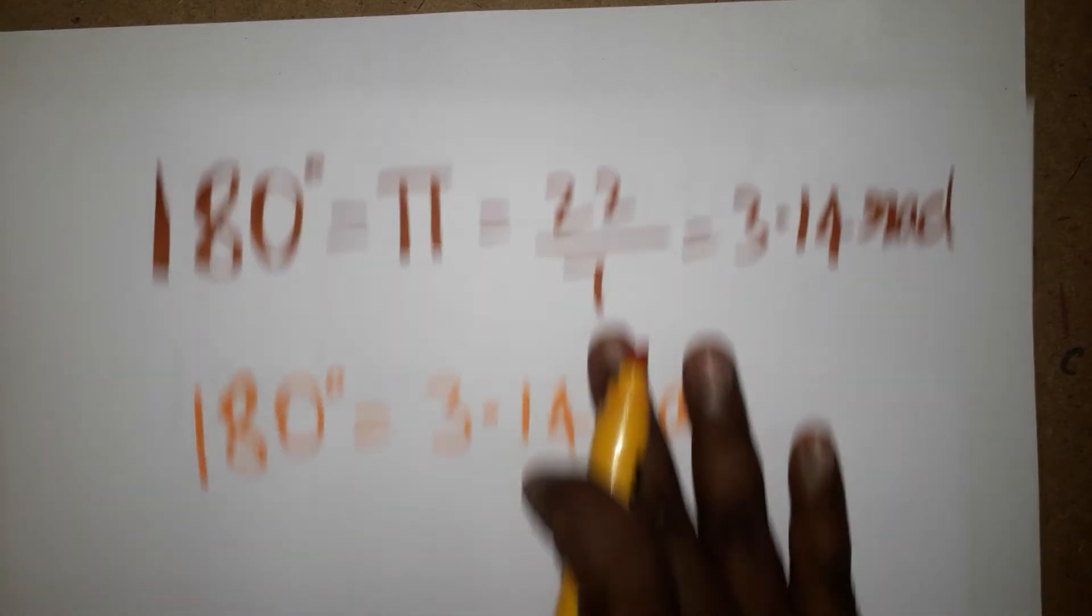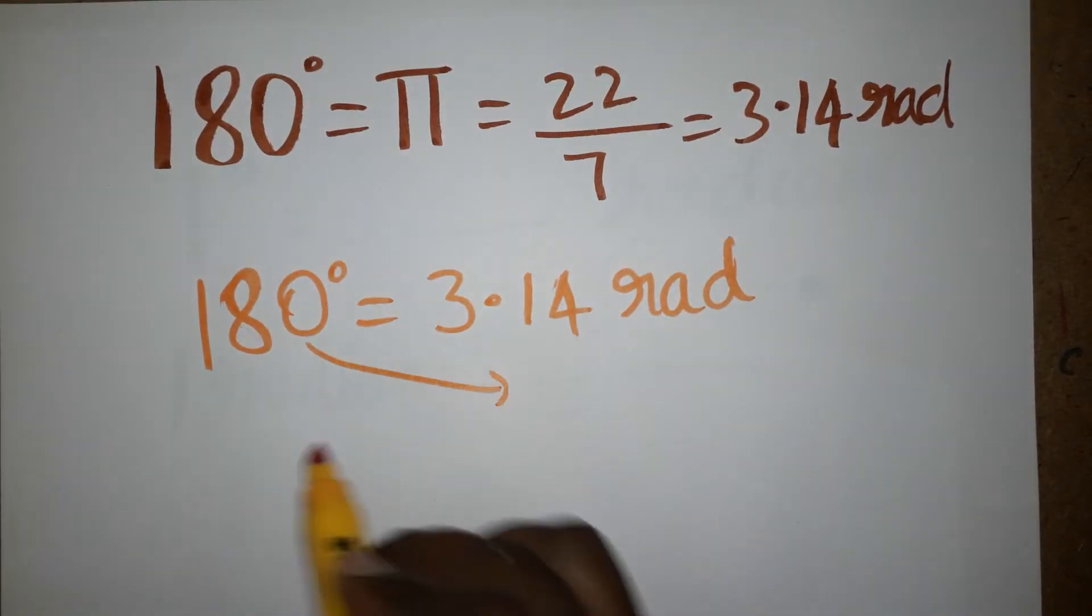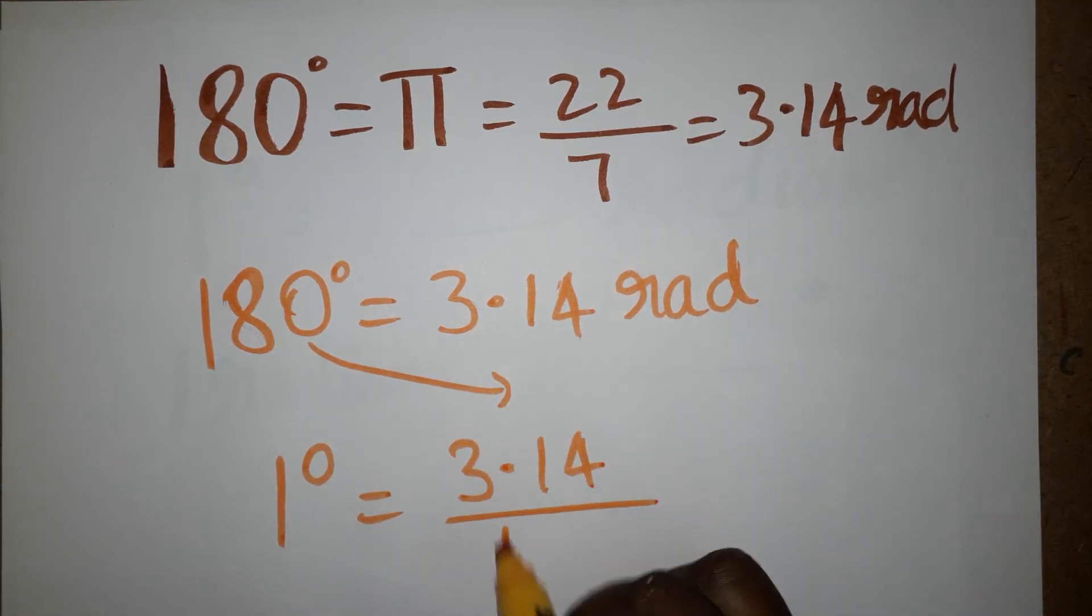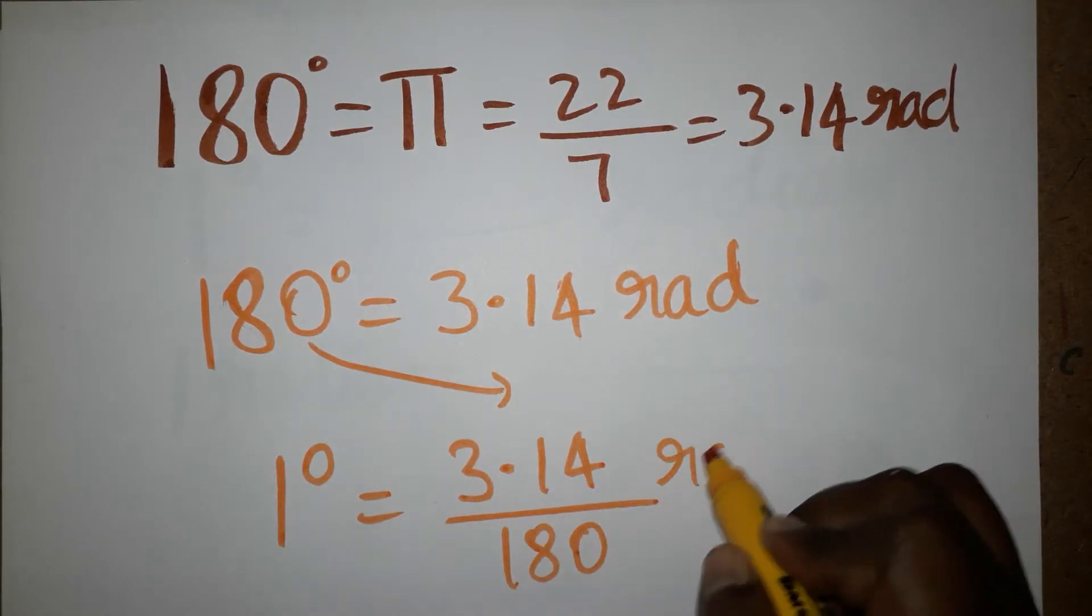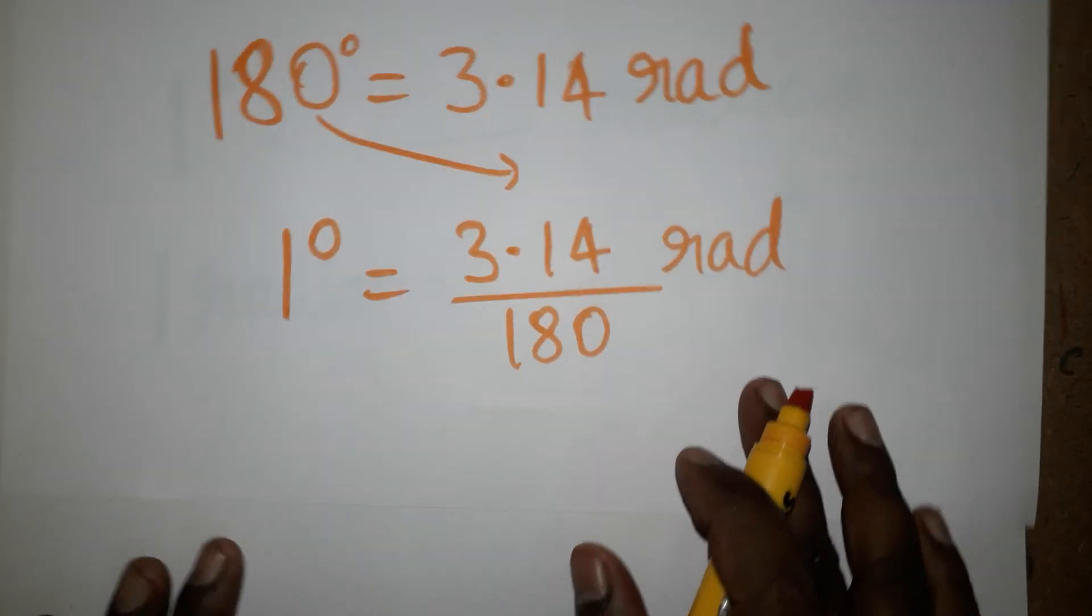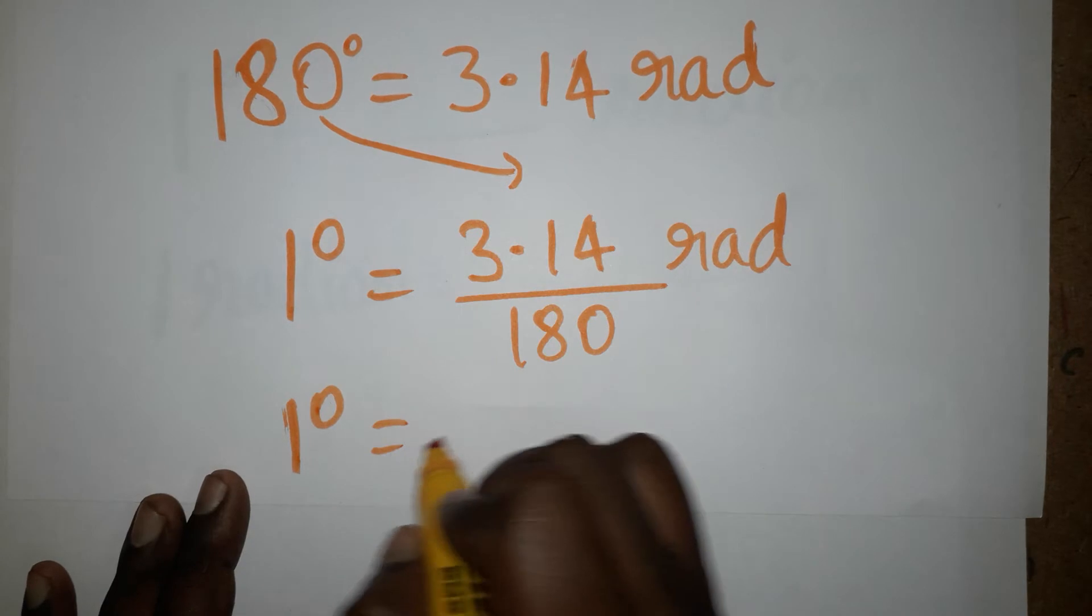Since 180 degrees equals 3.14 radians, we bring this value here. So 1 degree equals 3.14 divided by 180. This calculation gives us 1 degree equals 0.01745 radians.